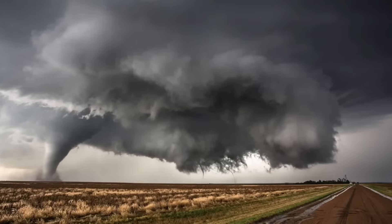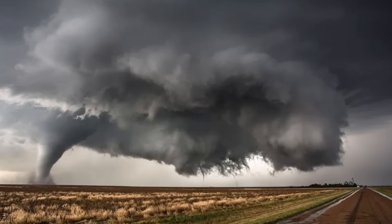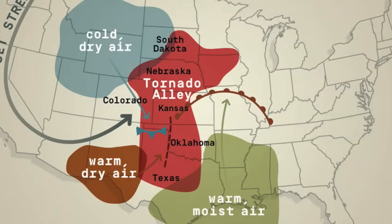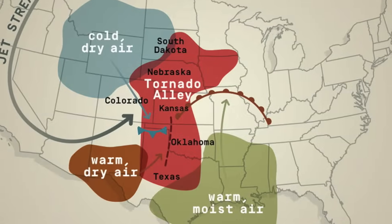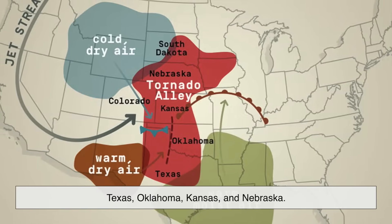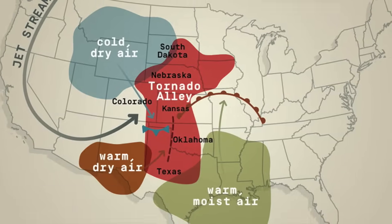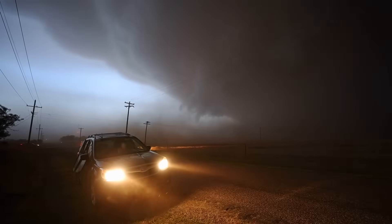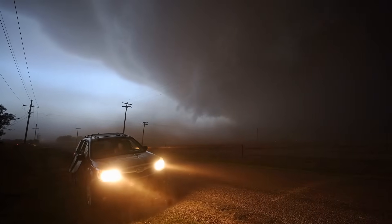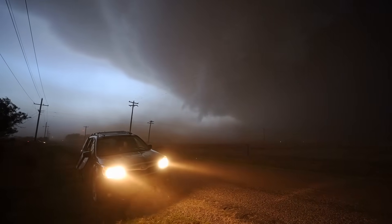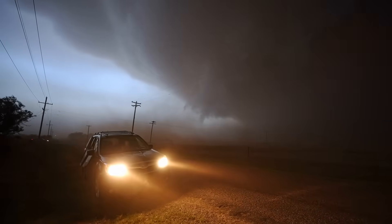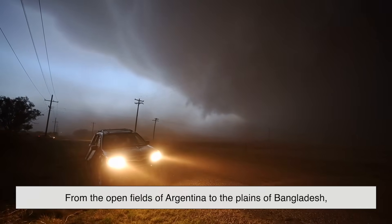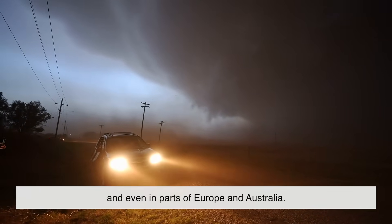When we think of tornadoes, most people picture the flat plains of the United States, often called Tornado Alley. That region, stretching across Texas, Oklahoma, Kansas, and Nebraska, sees more tornadoes than anywhere else on Earth. But tornadoes aren't exclusive to America — they can form anywhere if the right conditions exist, from the open fields of Argentina, to the plains of Bangladesh, and even in parts of Europe and Australia.